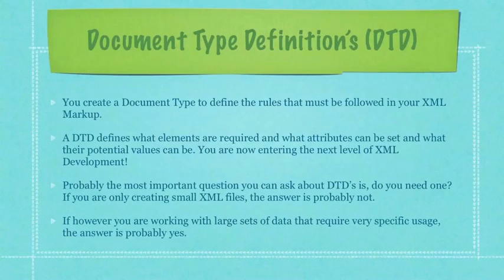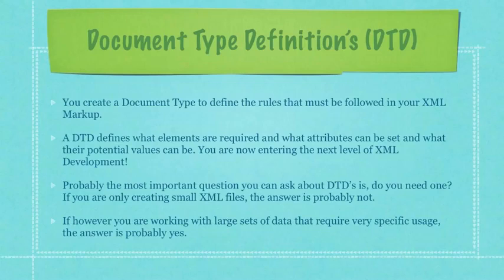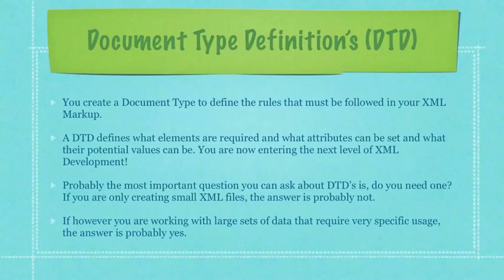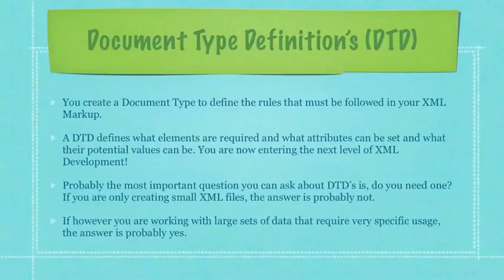Now I'll briefly go through what a document type definition is. You create a document type to define the rules that must be followed in your XML markup. A DTD defines what elements are required, what attributes can be set, and what their potential values can be. You are now entering the next level of XML development. Probably the most important question you can ask about DTDs is: do you need one? If you are only creating small XML files, the answer is probably not. If you're working with large sets of data that require very specific usage, the answer is probably yes.